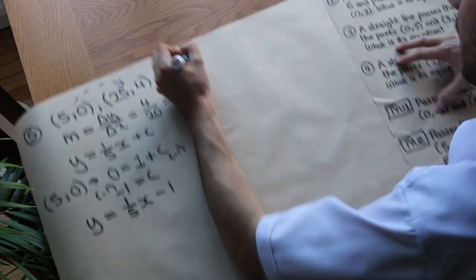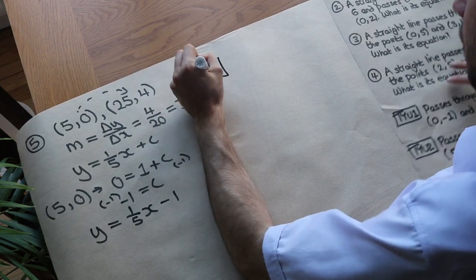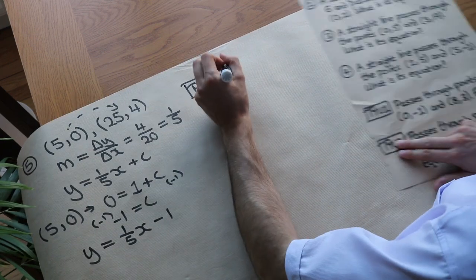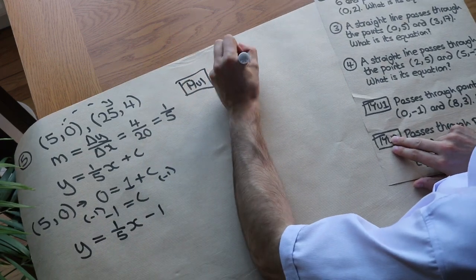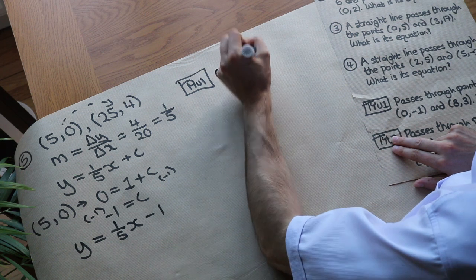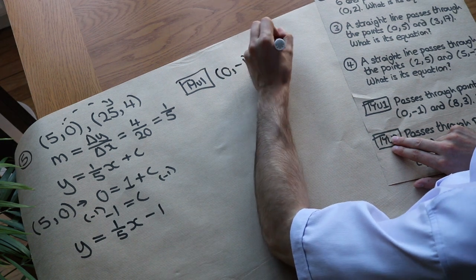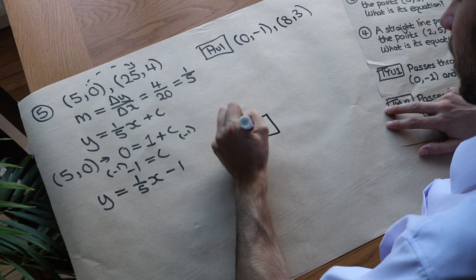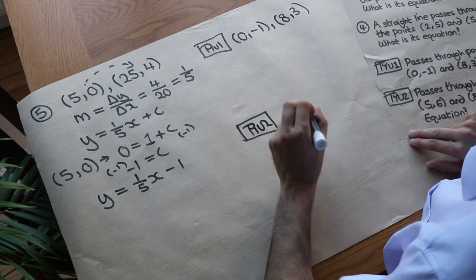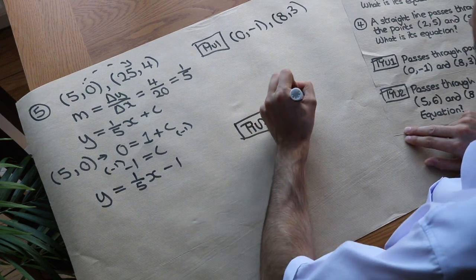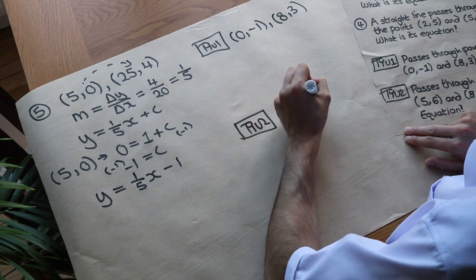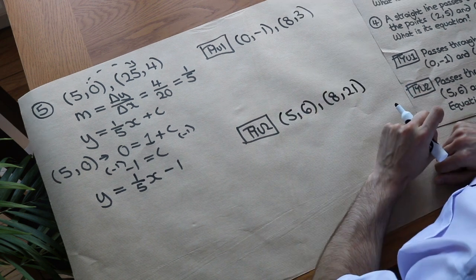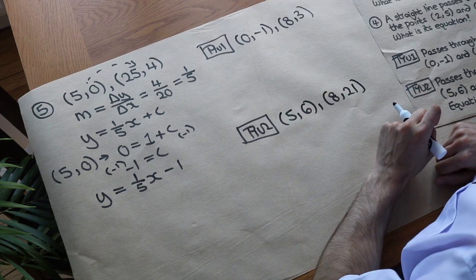Right, I've got two test your understanding questions for you. First: find the equation of a line passing through the points 0, minus 1 and 8, 3. Second, a harder type: find the equation of a line passing through 5, 6 and 8, 21. You may want to pause the video at this point to have a go at those.